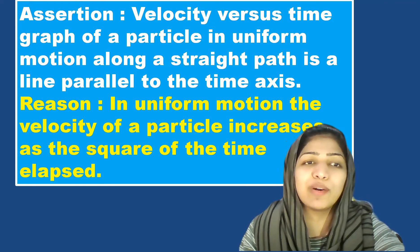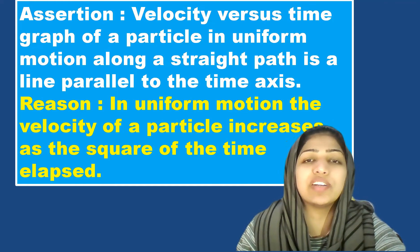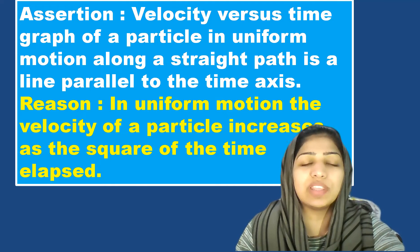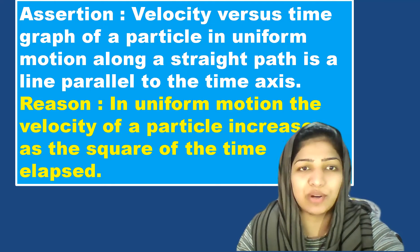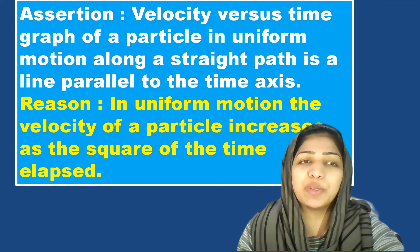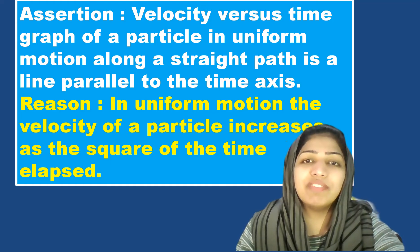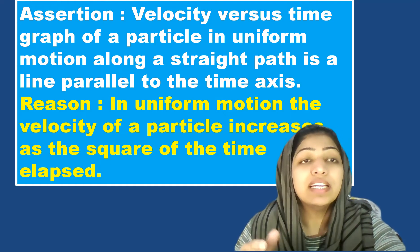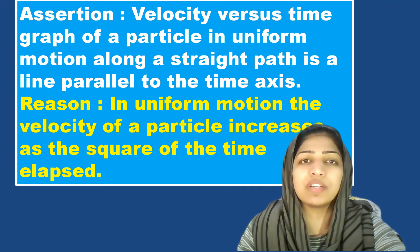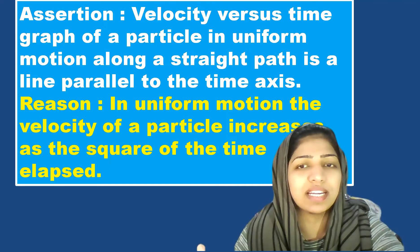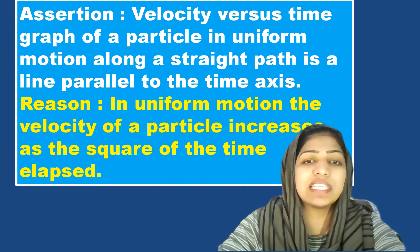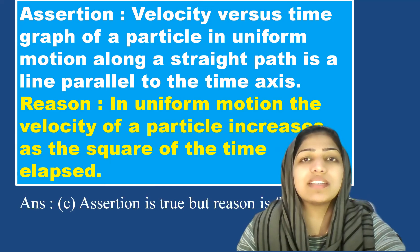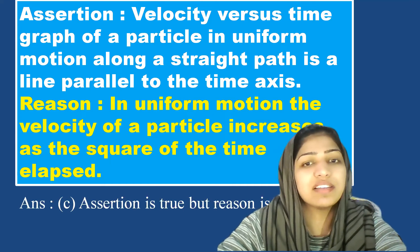My dear 90s. This should be a constant. Now, assertion is true, reason is false. Assertion is true but reason is false. Option is C — this means we choose assertion is true but reason is false.